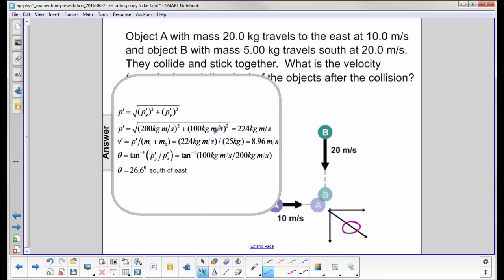The Y momentum is going to be 5 times 20, which is 100. You then get 224 kilogram meters per second. To find the velocity,